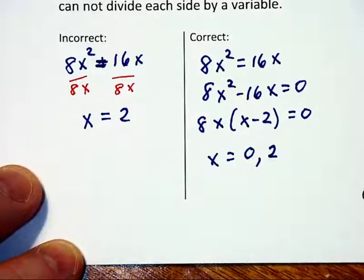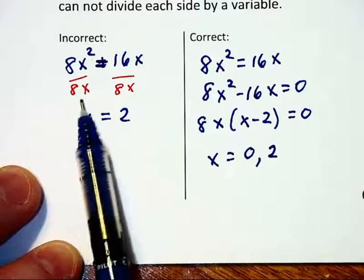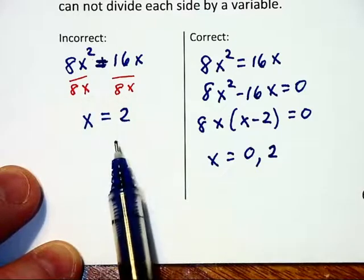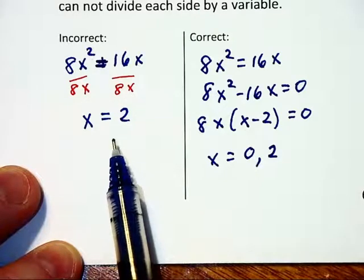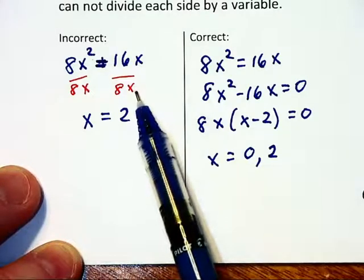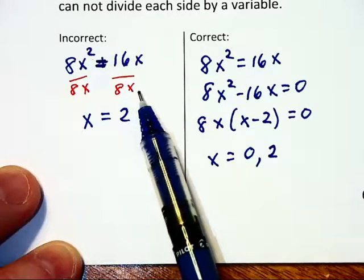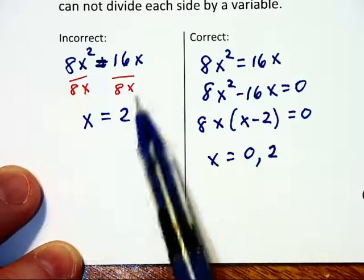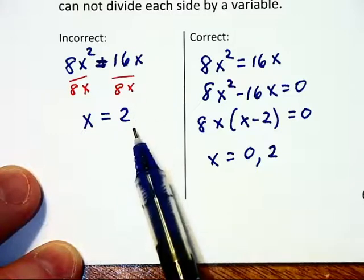The point I'm trying to make is the following. You are not allowed to divide both sides of an equation by whatever you feel like. You're allowed to divide both sides of an equation by a constant but not by a variable because when you're divided by a variable, you end up losing or dividing out one of your solutions.